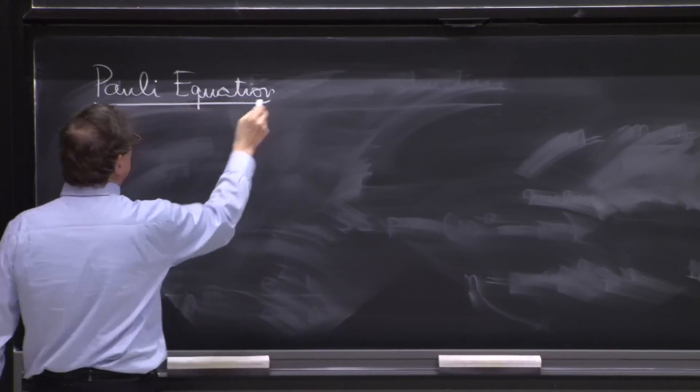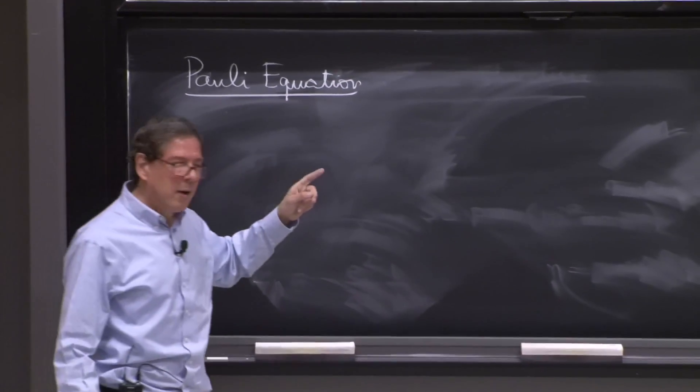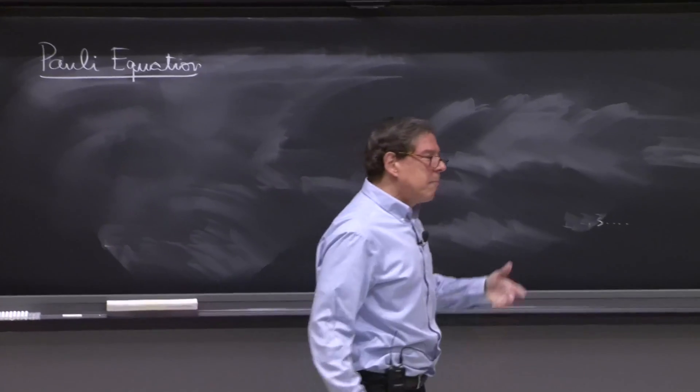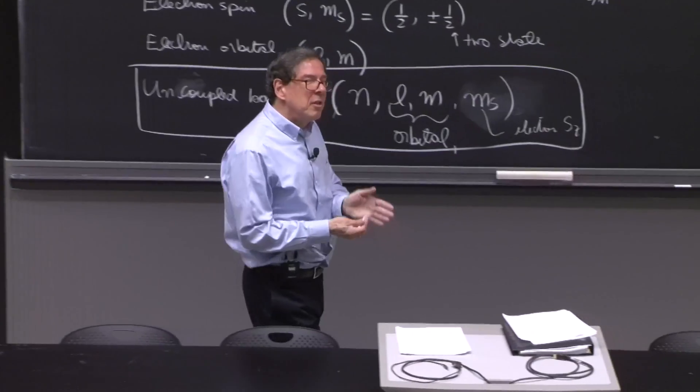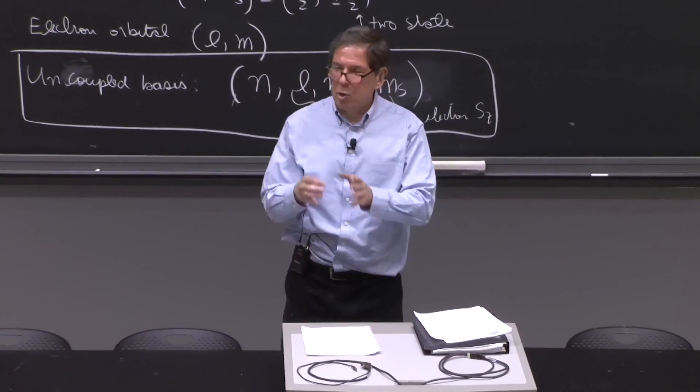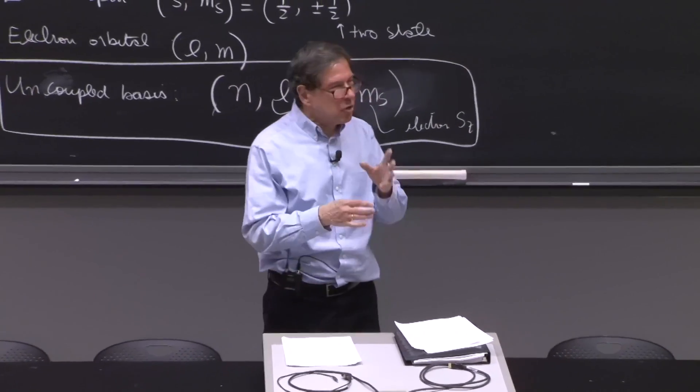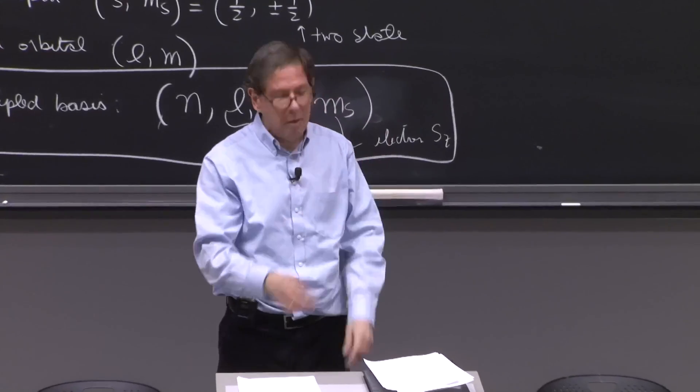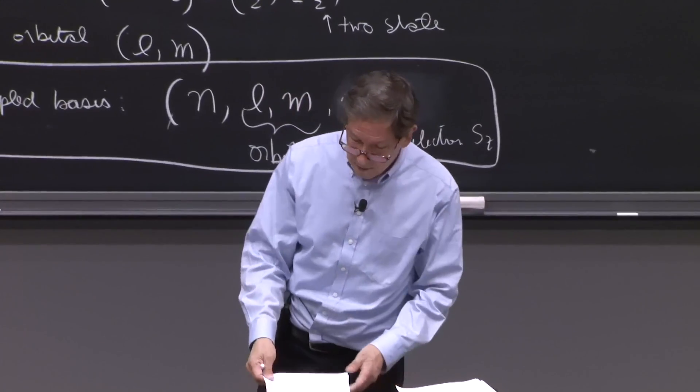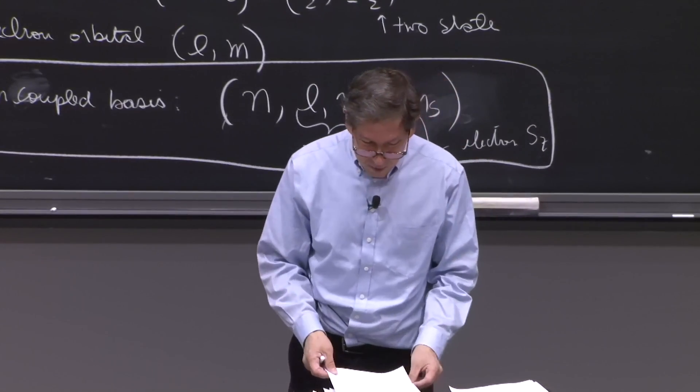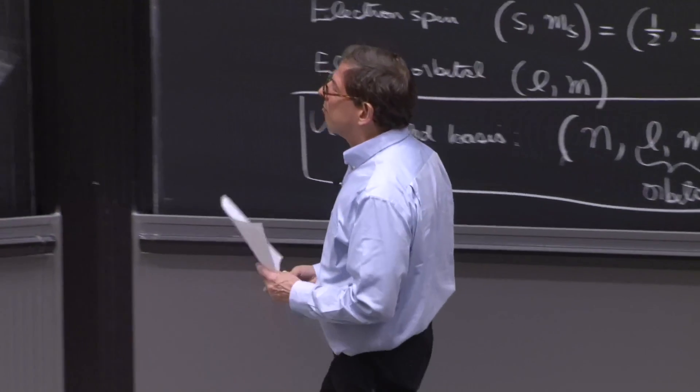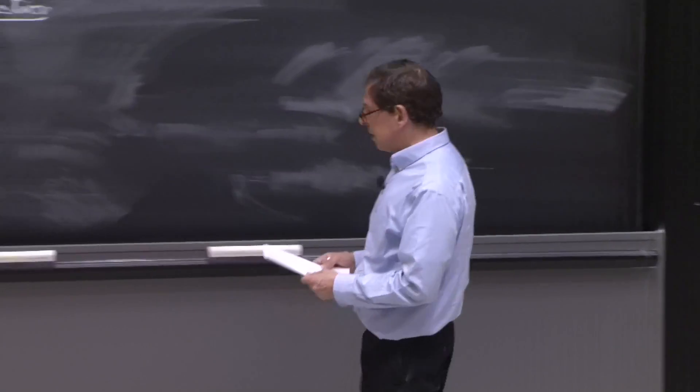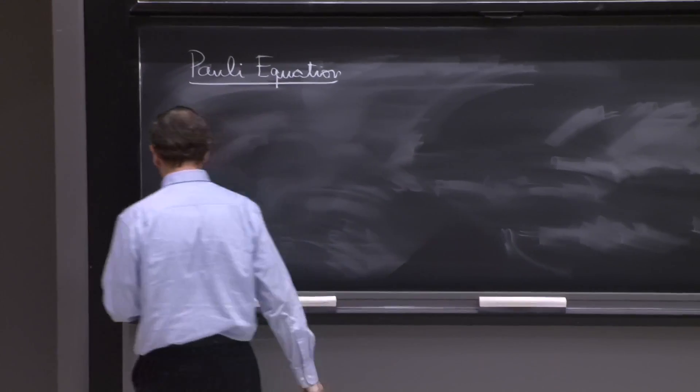So the Pauli equation is what we have to do now. So what is the Pauli equation? It is the first attempt there was to figure out how the Schrodinger equation should be tailored for an electron. So we can also think of the Pauli equation as a baby version of the Dirac equation, which is the complete equation for the electron.